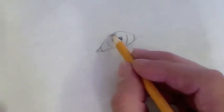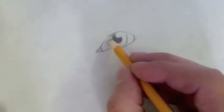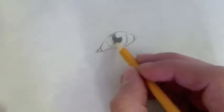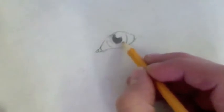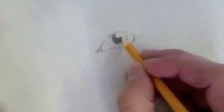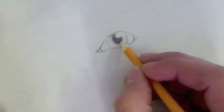you can start on the iris by slowly bringing out some of that darkness with your pencil. Always go away from the pupil. By layering these small lines, it will give it a realistic look.